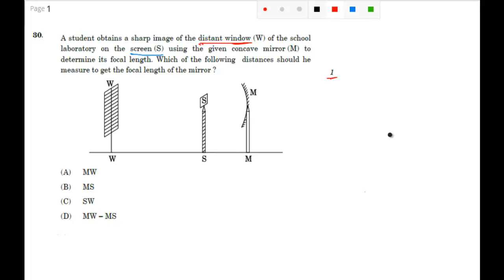So as you know, in case of concave mirror, if the light from the object is coming from infinity, this will converge at your focal length. That means your image will form at the focus.